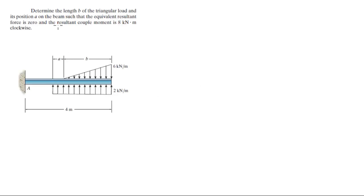Alright guys, let's do this problem that says determine the length B of the triangular load and its position A on the beam such that the equivalent resultant force is 0 and the resultant couple moment is 8 kNm clockwise about A, because A is the only point they gave you, so the force has to be going clockwise.